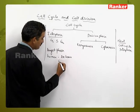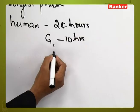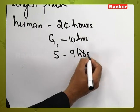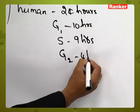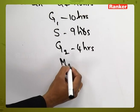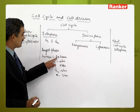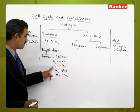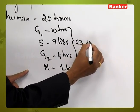Out of the 24 hours, G1 accounts for 10 hours, S phase accounts for 9 hours, G2 phase accounts for 4 hours, and the mitotic or division phase accounts for 1 hour. So the total cell cycle operates for 24 hours, out of which 23 hours are for interphase.